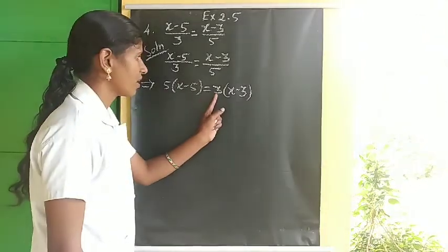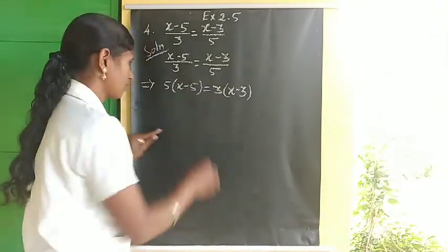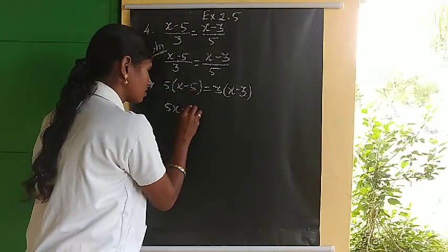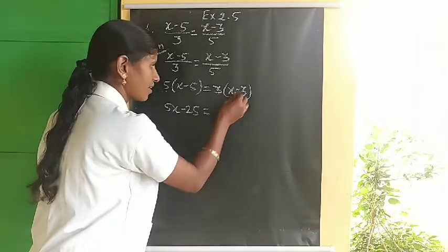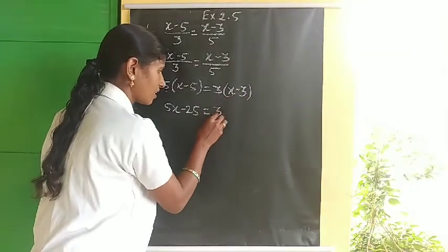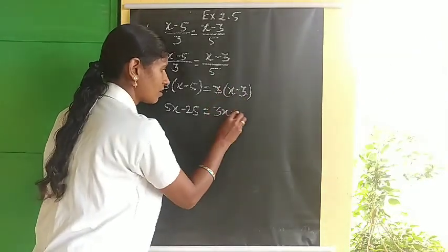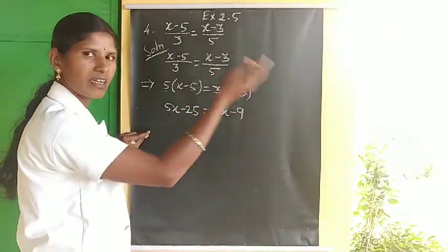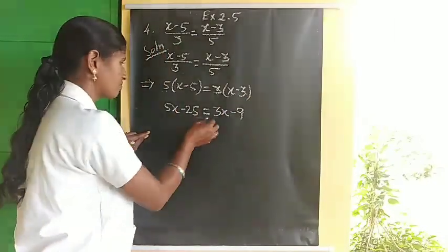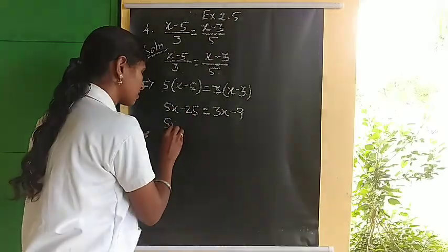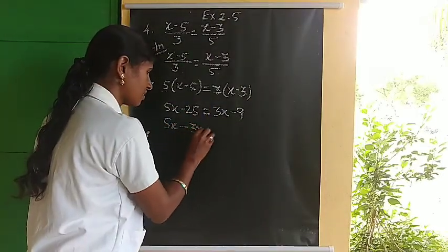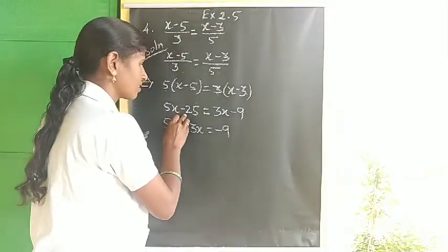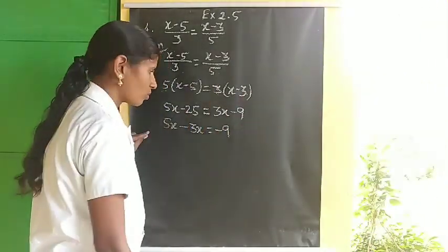Multiply inside: 5 into x gives 5x, and 5 fives are 25. Then 3 into x gives 3x, and 3 threes give minus 9. Now bring x terms to one side and constants to the other: 5x minus 3x equals x minus 9, then plus 25 to LHS.